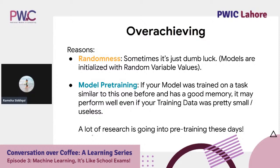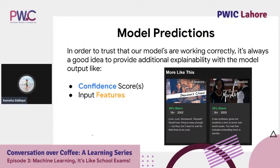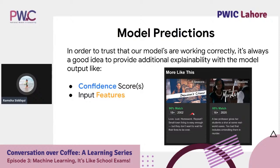To trust that your model is working correctly, provide additional explainability with model outputs — like confidence scores and input features. Netflix is a good example: when you click on a movie, it shows 'more like this' and tells you which input features it used to make that recommendation, along with a confidence percentage for each output. This kind of explainability should definitely be considered in your AI or machine learning model design.